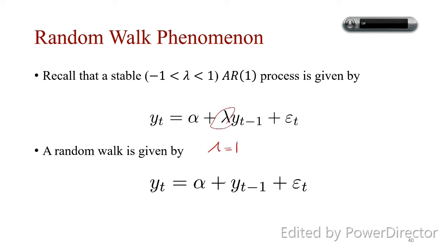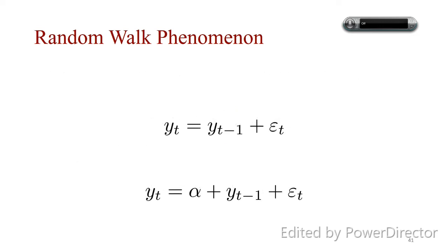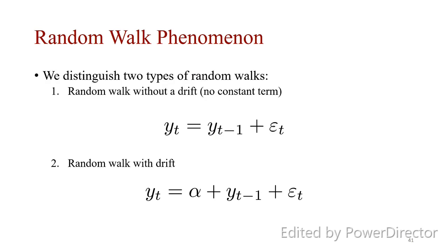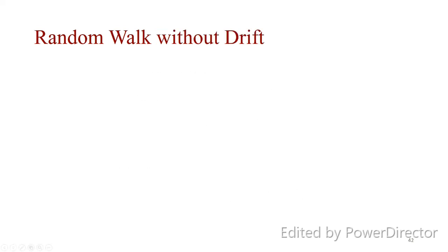A random walk is given by imposing that λ equals 1. When λ equals 1, we call this a random walk phenomenon. It is often better to distinguish between random walks.